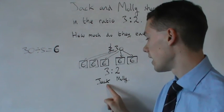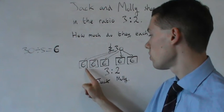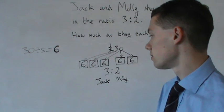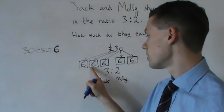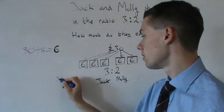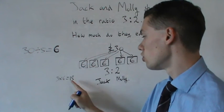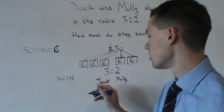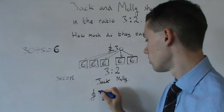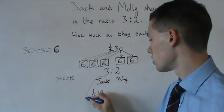So, I'm going to return to Jack now. Jack has got 3 lots of 6. Now, 3 times 6 is 18. So Jack has got 18 pounds in total.